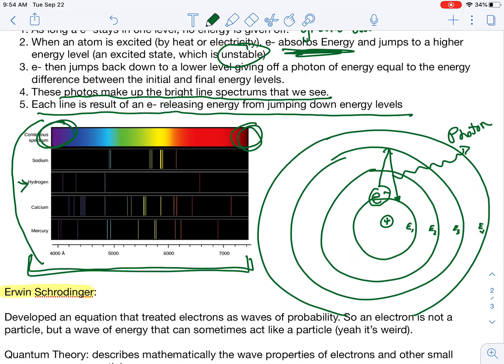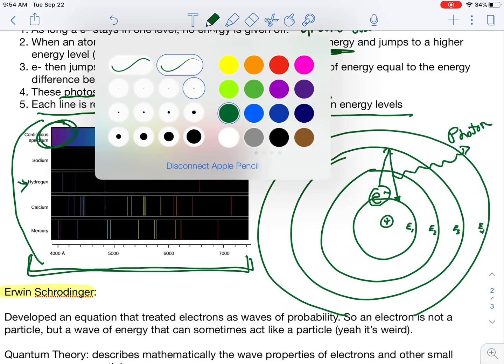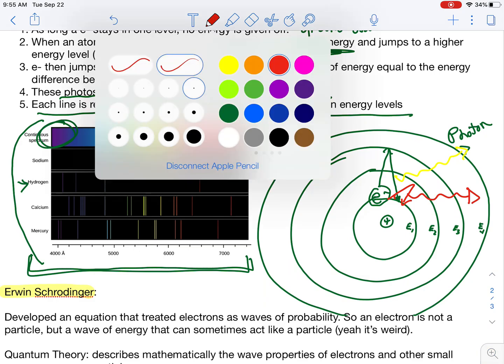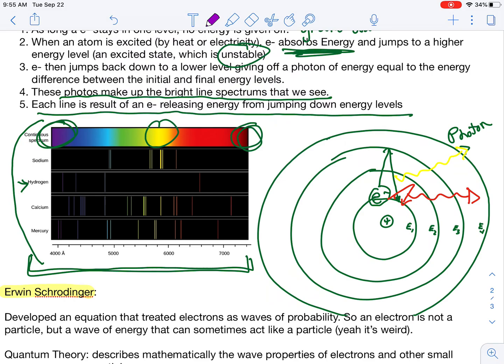Each line is a result of energy being released from jumping down a different energy level. So the bigger the jump, the more energy that's released. A very big jump will be a high energy, something like purple. And a small jump would be something with low energy, something like red. This jump that I've written over here would be like a medium jump. Maybe that's like actually yellow in color. If I wanted to do a smaller jump, that would be like a red. And then a very large jump would result in very high energy or like a purple color. And that's where these different bright line spectrum colors come from.